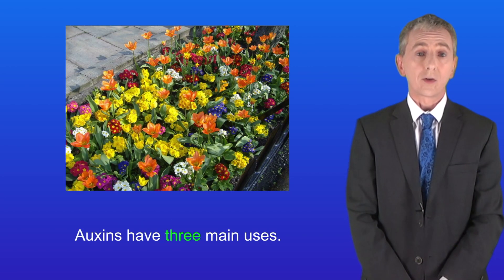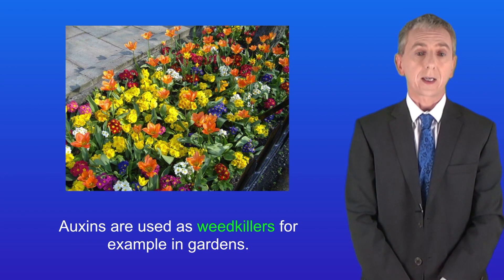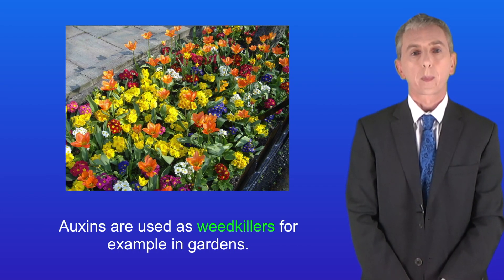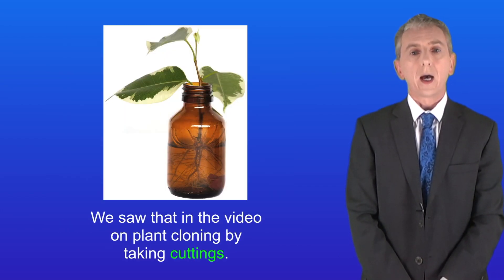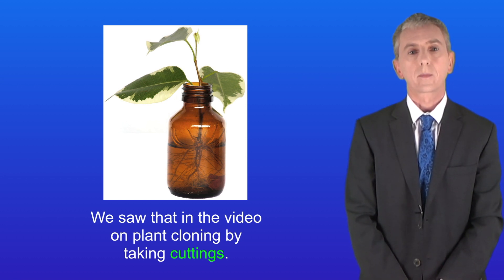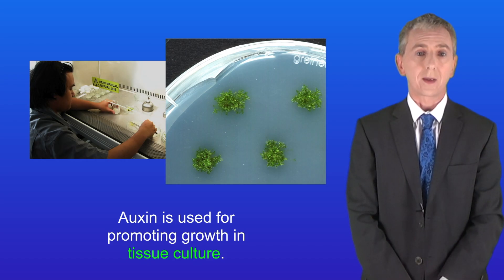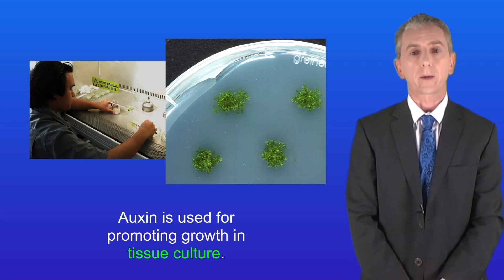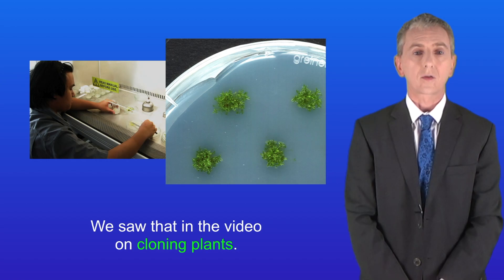Auxins have got three main uses. Firstly, auxins are used as weed killers, for example in gardens. Secondly, auxins are used as rooting powders, and we saw that in the video on plant cloning by taking cuttings. And lastly, auxins are used for promoting growth in tissue culture, and again we saw that in the video on cloning plants.